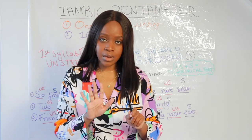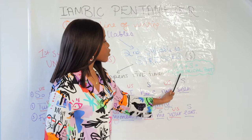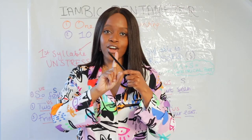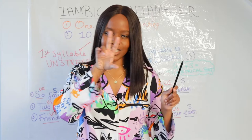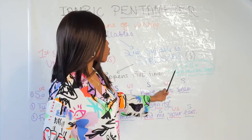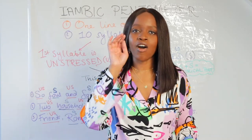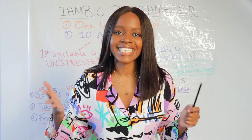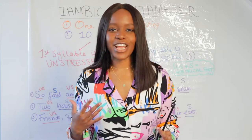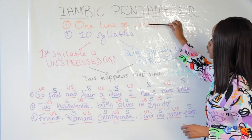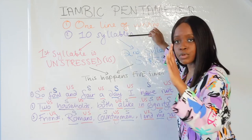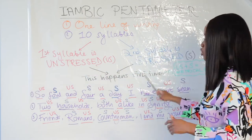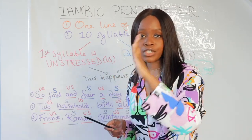This pairing — unstressed plus stressed — happens five times. An unstressed syllable coupled with a stressed syllable is what we call a metrical foot. So taking just the first two syllables of my name, 'Bar-ba', both of them going together is one metrical foot. Therefore in iambic pentameter there are five metrical feet: first pair, second pair, third pair, fourth pair, fifth pair. Five times two equals ten syllables in a line of writing.